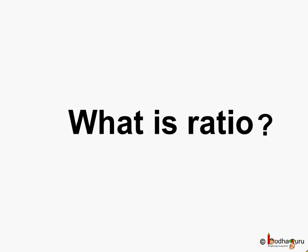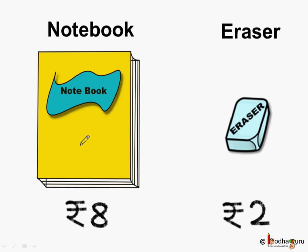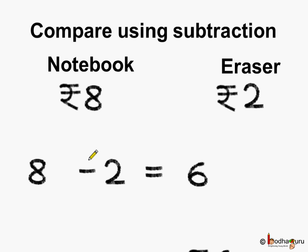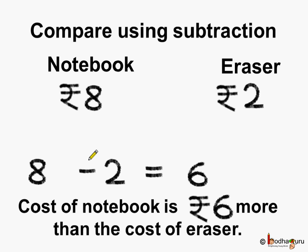So what is a ratio? Aman bought a notebook and its price was rupees 8. He also bought an eraser and its price was rupees 2. Now can we compare the price of the notebook with the price of the eraser? First let us try using subtraction. The notebook costs rupees 8 and the eraser costs rupees 2, so 8 minus 2 is equal to 6. We can say the cost of the notebook is rupees 6 more than the cost of an eraser.